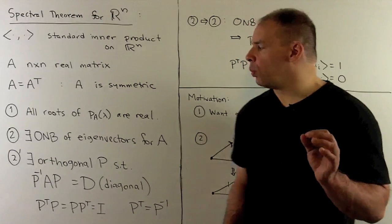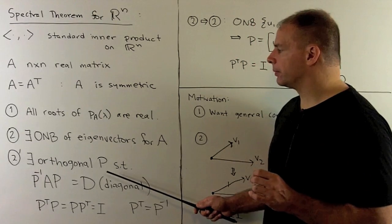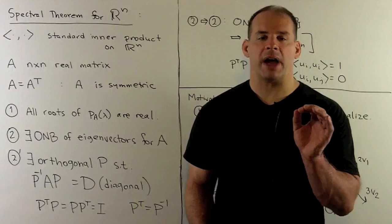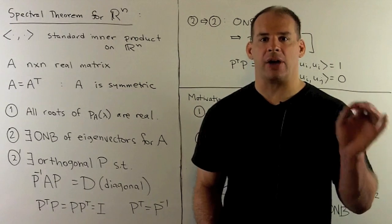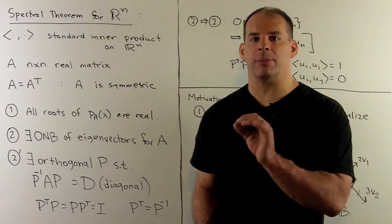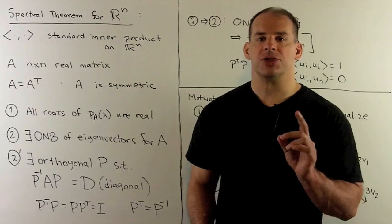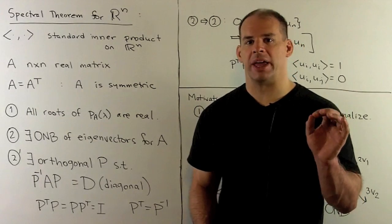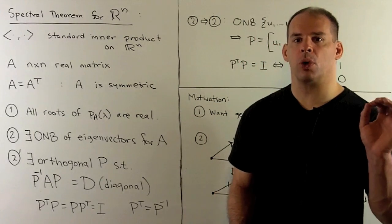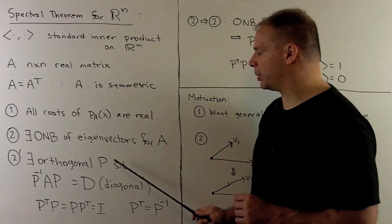Why are these two statements equivalent? First note, if I could put A into diagonal form, that's equivalent to the statement that we have a basis of eigenvectors for A. So we just need to explain the connection between the orthonormal basis and the orthogonal matrix P.